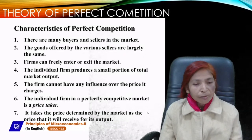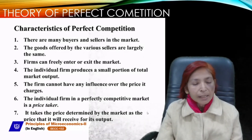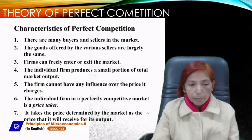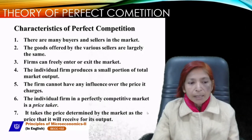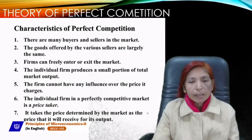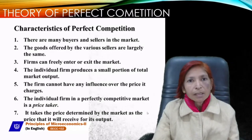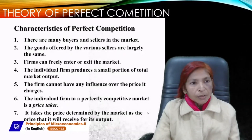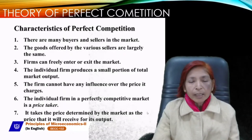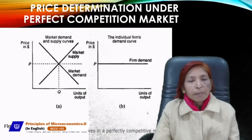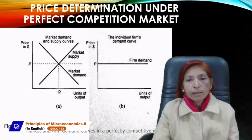The individual firm in a perfectly competitive market is a price taker, not a maker. It takes the price determined by the market as the price it will receive for its output. A perfect competitive firm cannot change the price — when the product is homogeneous, the price will also be uniform or identical. These are the features or characteristics of the perfect competition market.